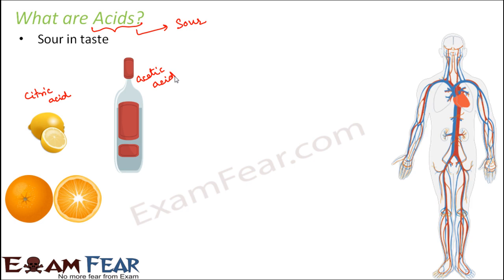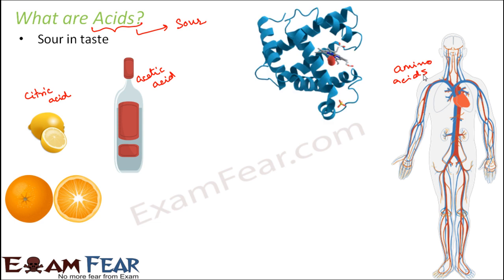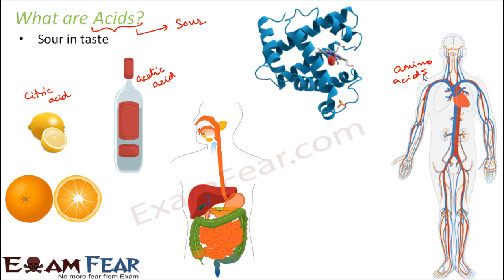Let us take yet another example — a very common one: our body. What is our body made up of? Our body contains a lot of proteins. And what are proteins made up of? Proteins are made up of amino acids. So proteins are also made up of acids. They play such an important role — they help in the construction of our entire body and they are also made up of some acids, namely amino acids.